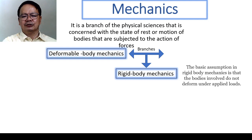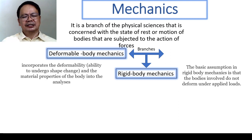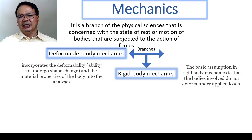The second branch of mechanics is the deformable body mechanics. In this branch of mechanics, the deformability or ability of the body to undergo shape change and their materials are already incorporated in the analysis. Their properties such as stress, ductility, and other properties are now included in the study.